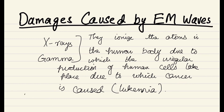Ultraviolet waves are also very dangerous for the human body. They do the same thing — they ionize the atoms and cause the irregular production of cells, due to which the most common type of cancer that ultraviolet waves cause is skin cancer.